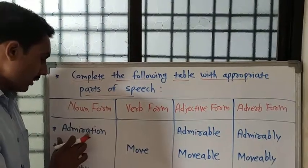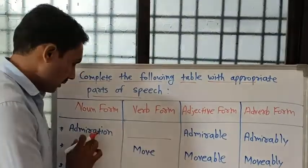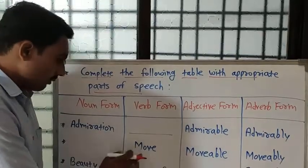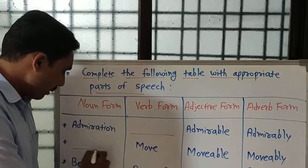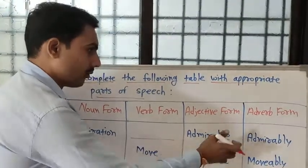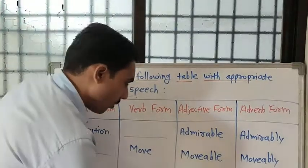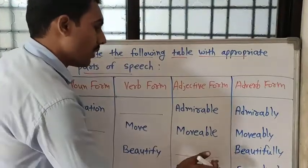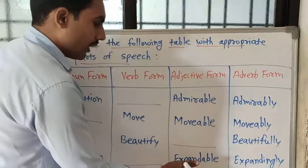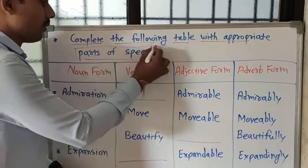In the first row, they provide you 'admiration' and you want to fill in the verb form. In the second line, they provide you the verb form, the adjective form, and the adverb form — you want to complete the noun form. In the third line, they provide you the noun form and you want to complete the adjective form. In the last row, they provide you the noun form, adjective form, and adverb form, and you want to complete the verb form.